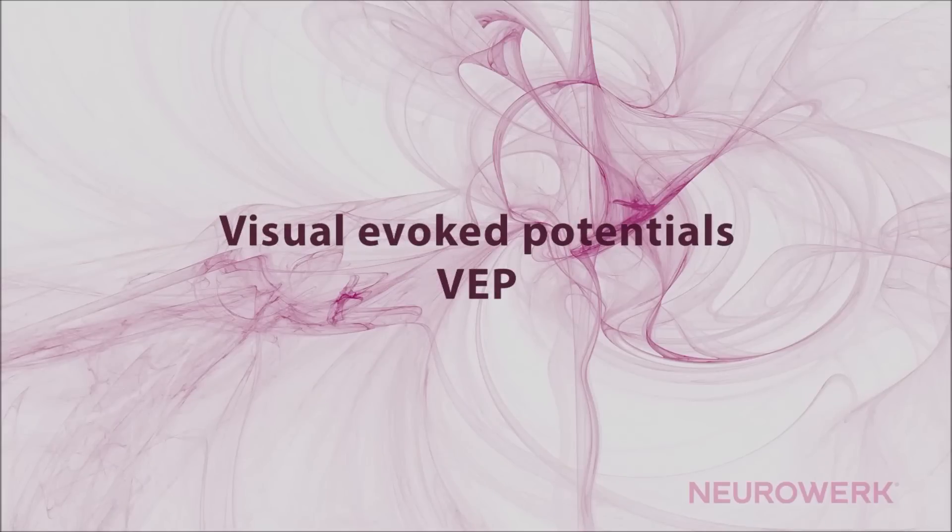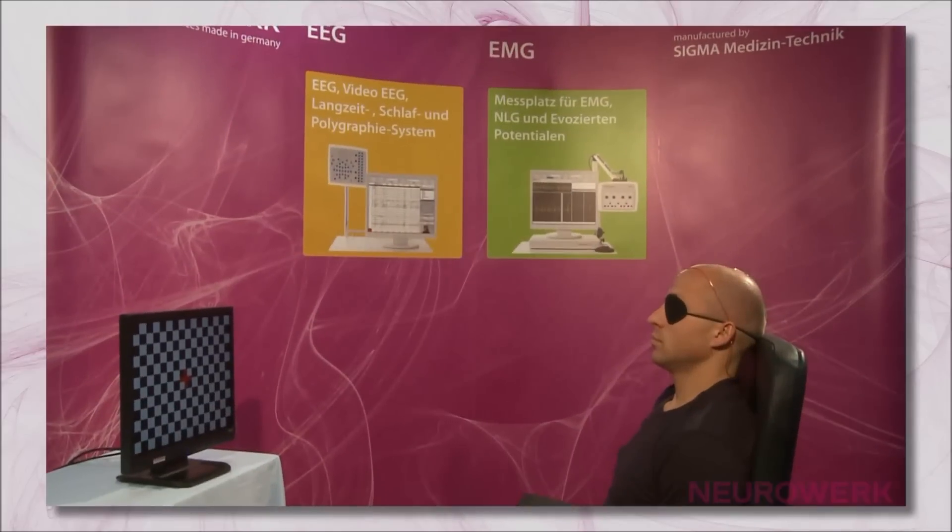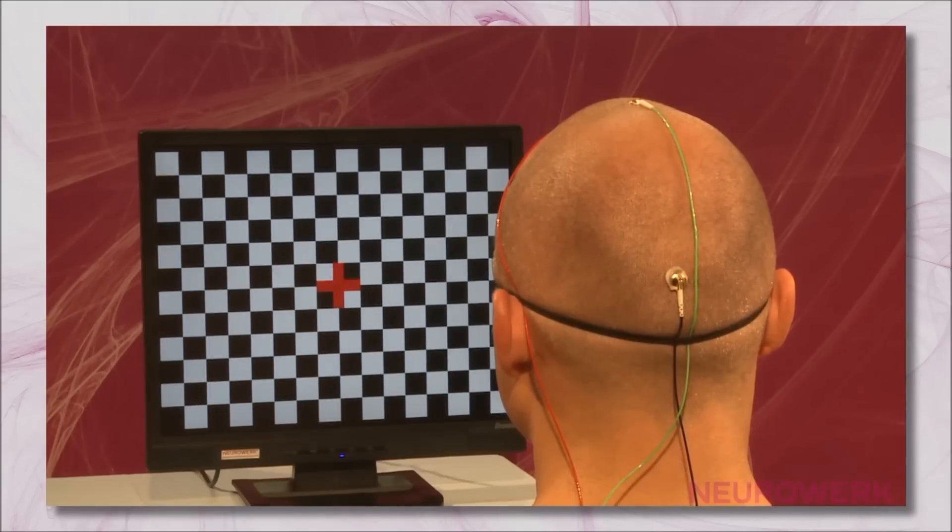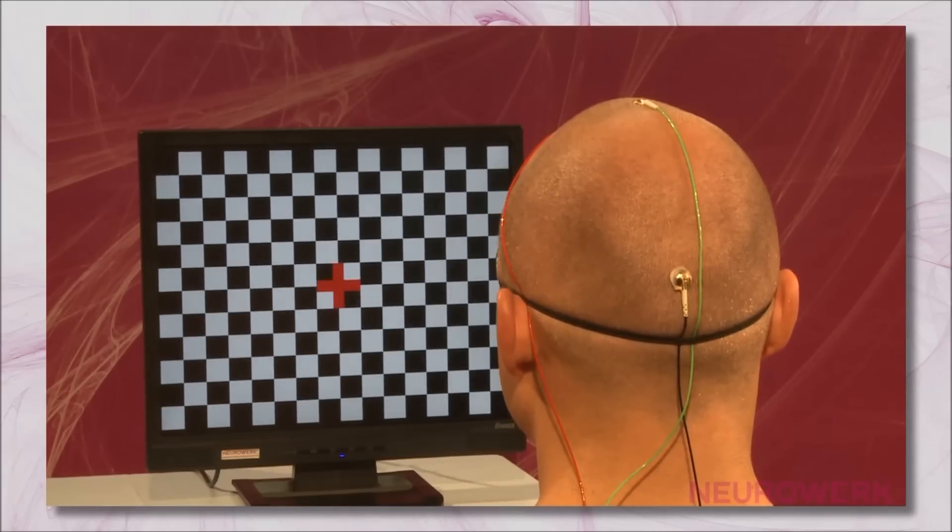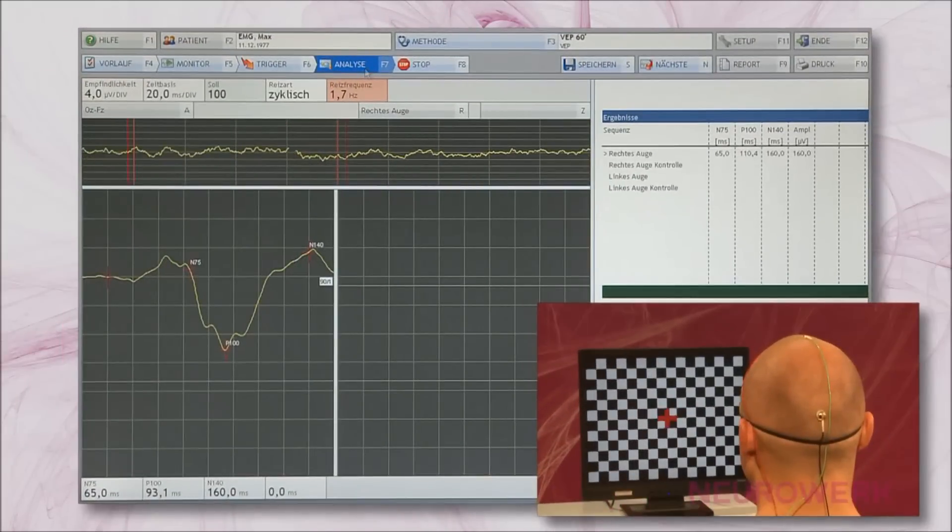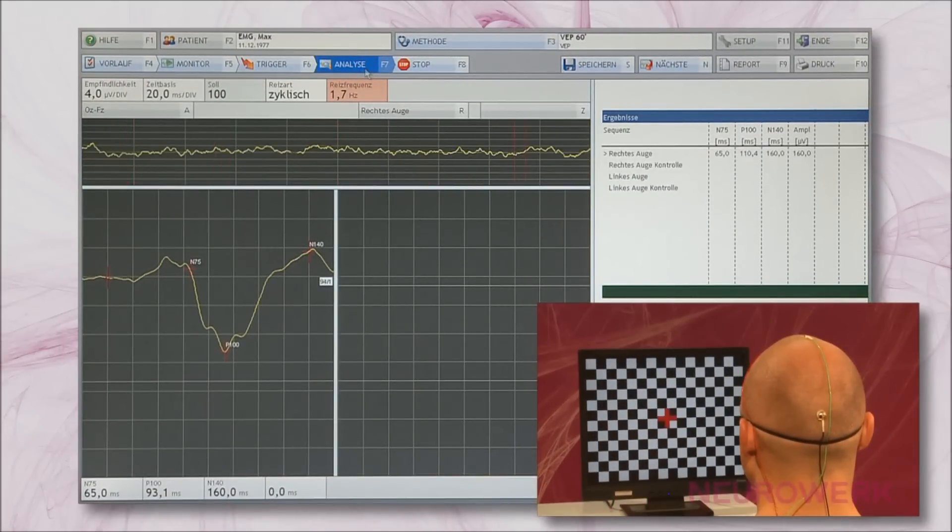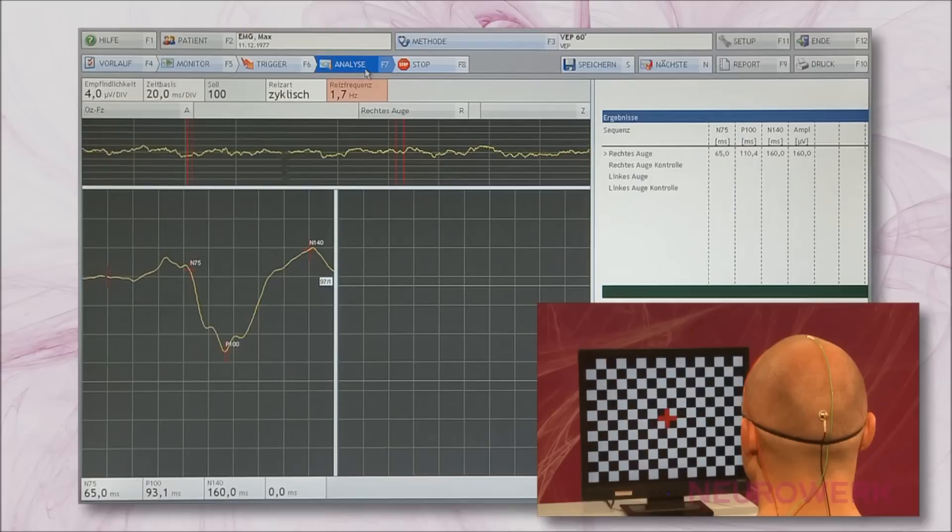Visual evoked potentials are measurable electrical potential fluctuations that are recorded in an occipital manner above the primary visual cortex. These are caused by visual stimulation of the eye. This stimulation occurs either through light flashes or a so-called checkerboard pattern with contrast reversal.